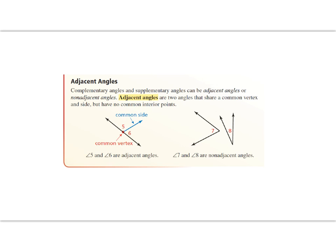Complementary and supplementary angles can be adjacent or non-adjacent. Adjacent angles are two angles that share a common vertex and side but have no common interior points. For example, angle five and angle six are adjacent — they share a common side and a common vertex. Angles seven and eight are non-adjacent because they do not share a side and they do not share a vertex.